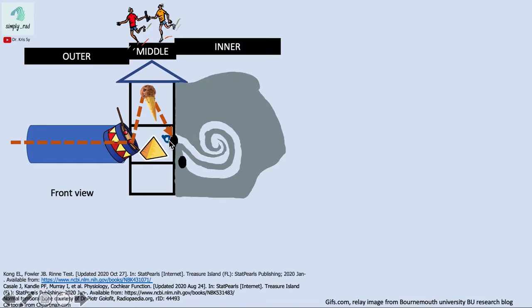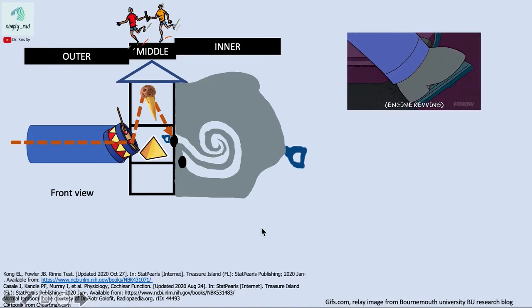As the vibration from the stapes is transmitted to the oval window, the stapes footplate presses on the oval window — similar to pressing the pedal of a car.